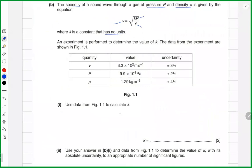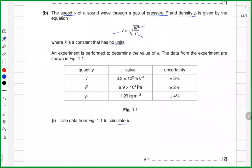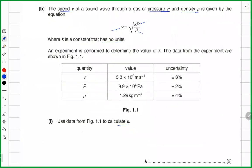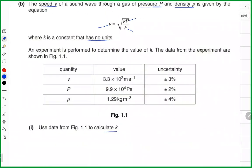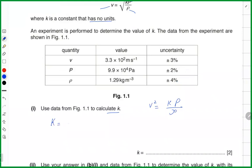Now use data to determine the value of k. In this kind of question we make k the subject of the formula. Since k is inside the square root, we square both sides: v² = kp/ρ, so k = v²ρ/p. Let's put the values in — p is 3.3 × 10², squared on top, multiplied by ρ which is 1.29.